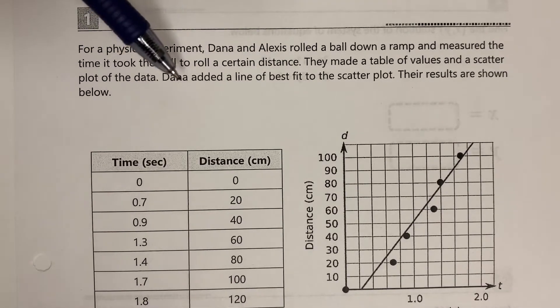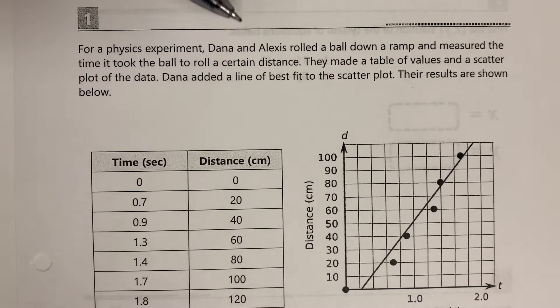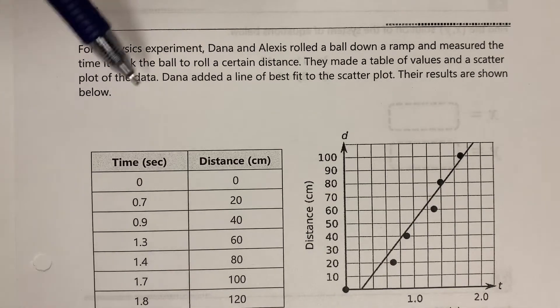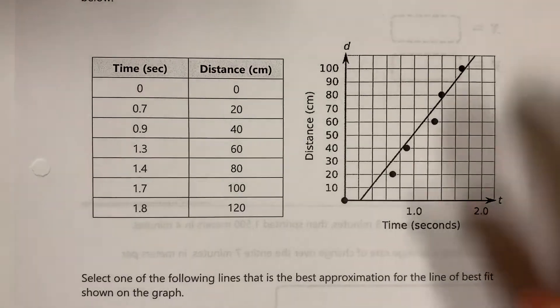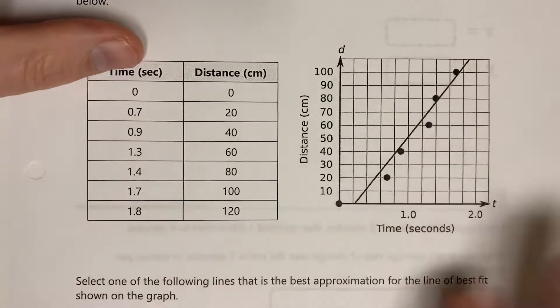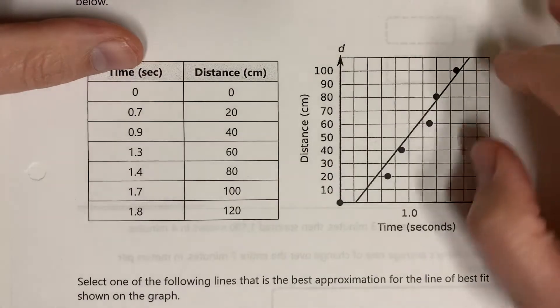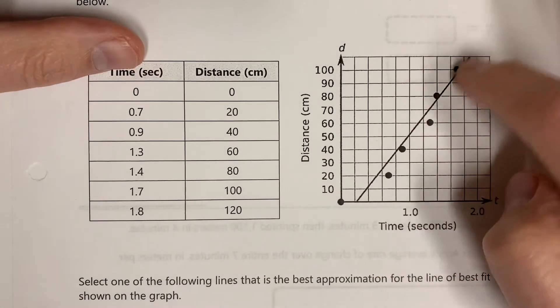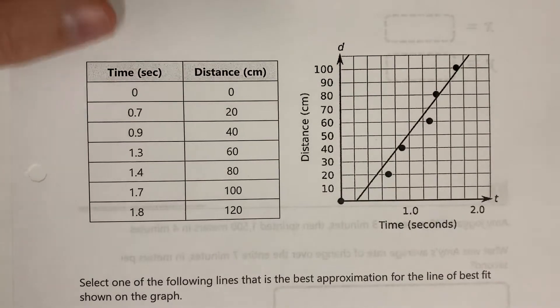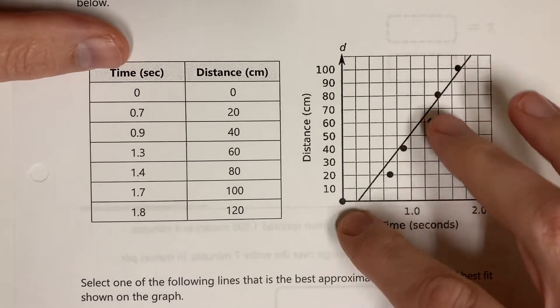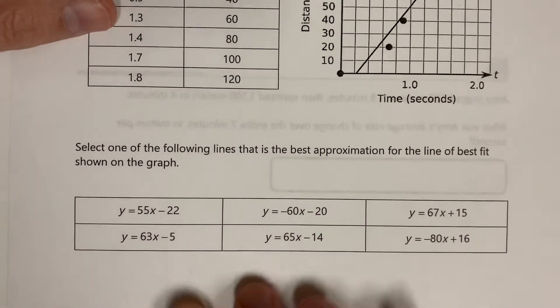Dana added a line of best fit to the scatter plot. Their results are shown below. So here you have a table of values and your scatter plot. Here is your graph and the scatter plot and the regression line, and the only thing I don't give you is the equation of the regression line.